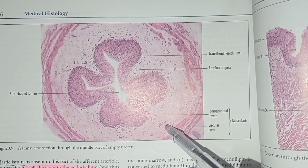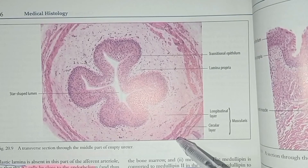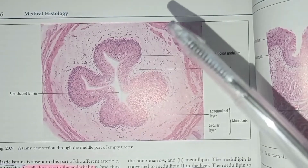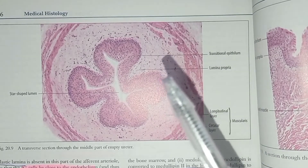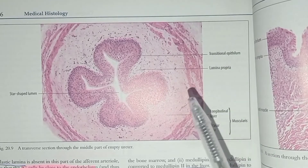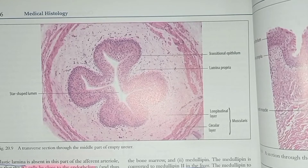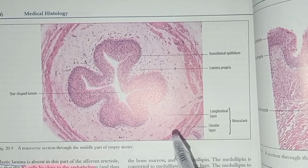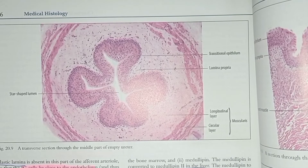In the upper third, the inner layer is longitudinal smooth muscle and the outer layer is circular. In the lower third of the ureter, there are three layers: inner longitudinal, middle circular, and outer longitudinal again. These ureteric muscles have peristaltic movements so that they propel urine towards the bladder.